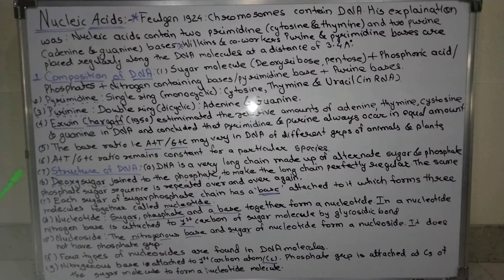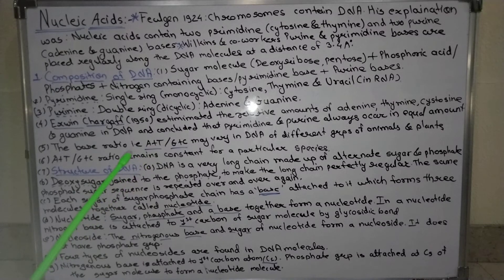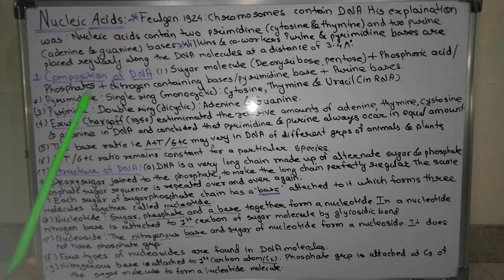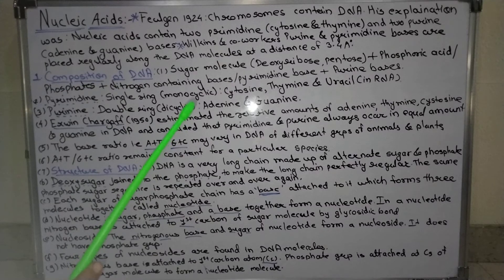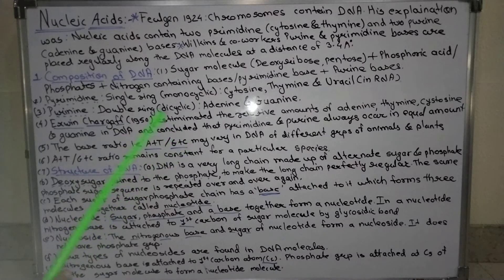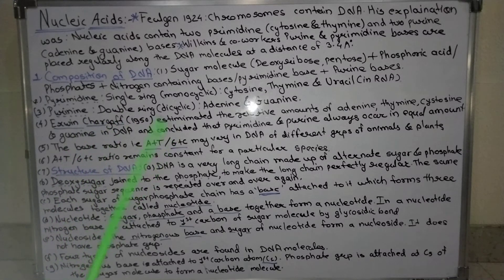The base ratio is expressed as (A+T)/(G+C). Adenine (a purine) pairs with thymine (a pyrimidine), and guanine (a purine) pairs with cytosine (a pyrimidine). So adenine pairs with thymine, and guanine pairs with cytosine.